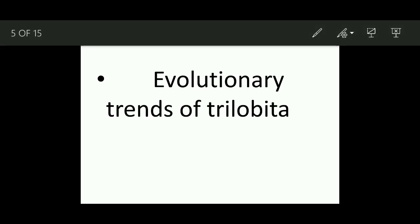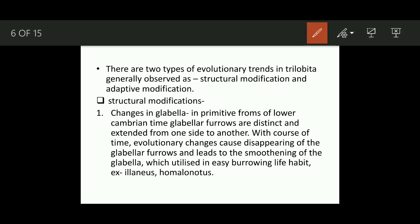Now we will see the evolutionary trends of Trilobita. The evolutionary trends have been observed on two bases: structural modifications and adaptive modifications. Adaptive modifications enhance the lifestyle of an organism, while structural modifications improve day-to-day life activities. In structural modifications, we see changes in the glabella, eyes, thorax, and pygidium in order to enhance efficiency.